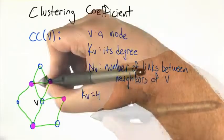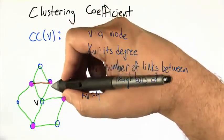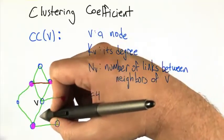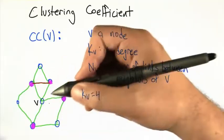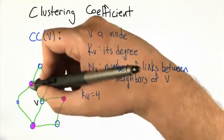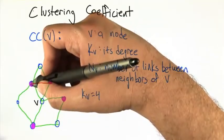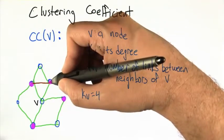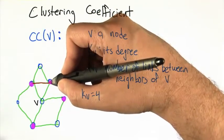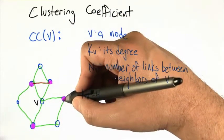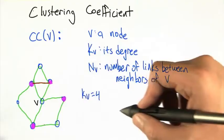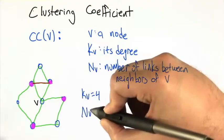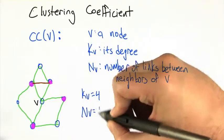Now let's look at the links between these neighbors of v. There's this one that goes between the two pink nodes, and that seems to be it. This node isn't connected to any other pink node, this one's not connected to any other pink node, this one is not connected to any pink node, and so on. So in this case, n_v is 1.